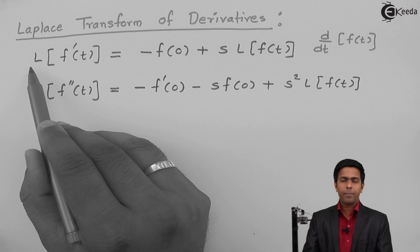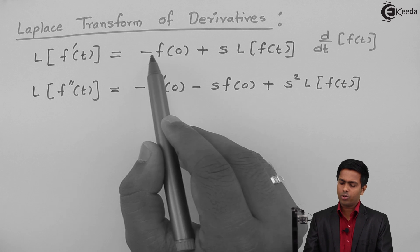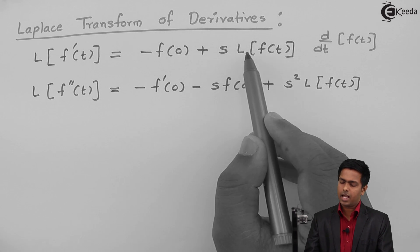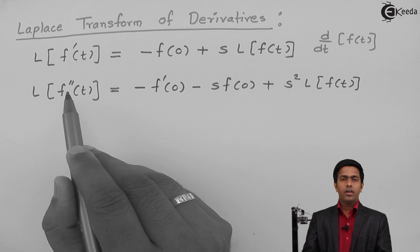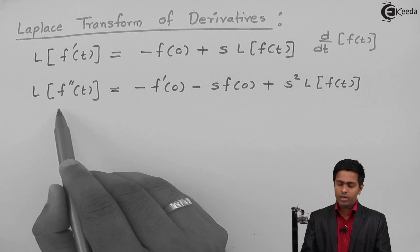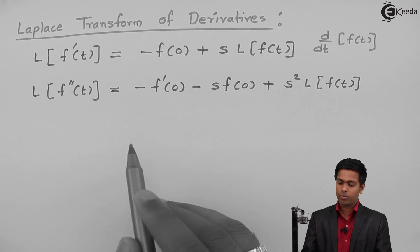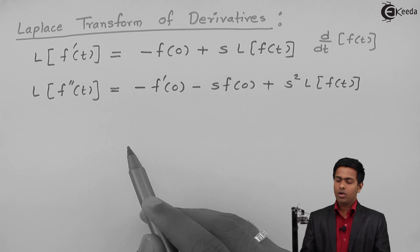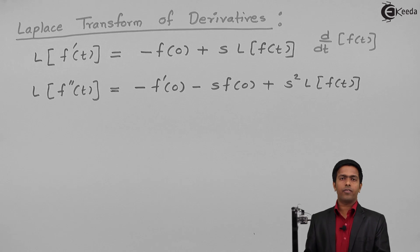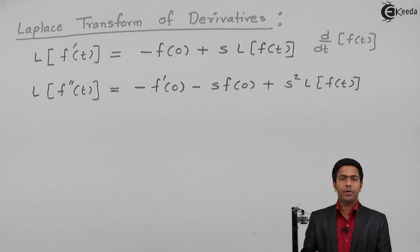The rule states that Laplace of f'(t) is equal to minus f(0) plus s times Laplace of f(t). And the Laplace of the second order derivative f''(t) is equal to minus f'(0) minus s·f(0) plus s² times Laplace of f(t). Now the question is: how do we prove this property?